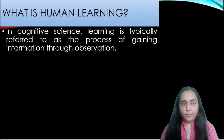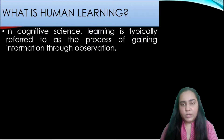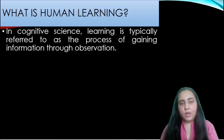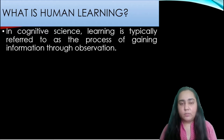What is human learning? In cognitive science, learning is typically referred to as the process of gaining information through observation. So you could be out somewhere just watching things, or maybe watching someone doing things, and that could be how you would be learning. Cognitive science is all about how the brain works, how cognition works, how people can recognize things. So in that type of science, learning is referred to as a process where information is gained mainly by observation.